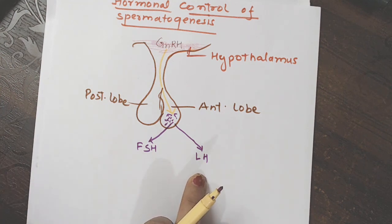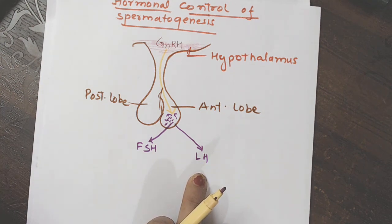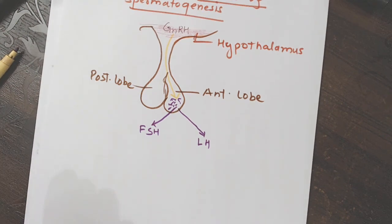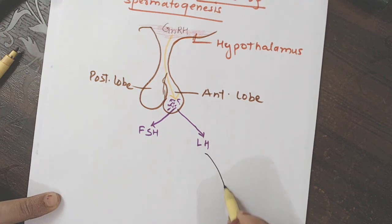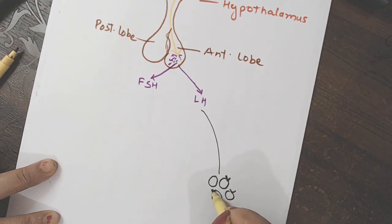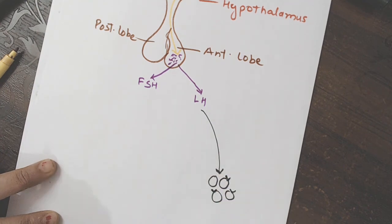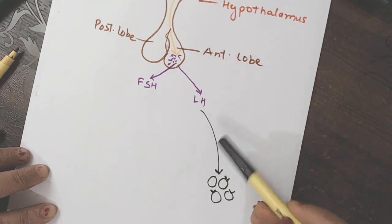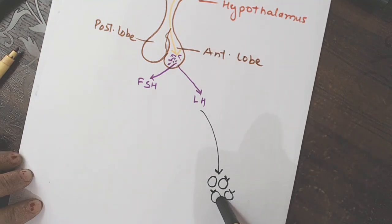Luteinizing hormone. FSH follicle stimulating hormone. Okay, this LH acts on Leydig cells. Toh is LH se hum Leydig cells tak pahucha dete hai. LH kaha par act karega? Leydig cells par. Toh bhai Leydig cells kaha hai? Here.